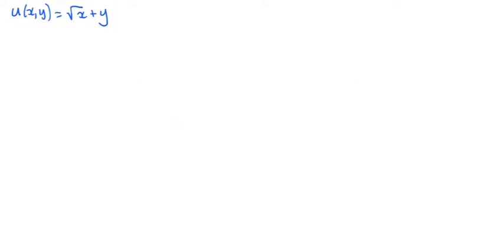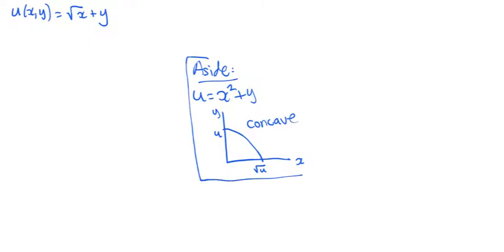For example, if the utility function was U equals x squared plus y, then the indifference curve would look like this. Now there is nothing really wrong with this, except it says that as consumption of x increases, the increase in utility changes by an increasing amount.